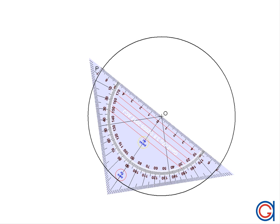Then we join the center of our circle O to the tangent point P using a ruler.